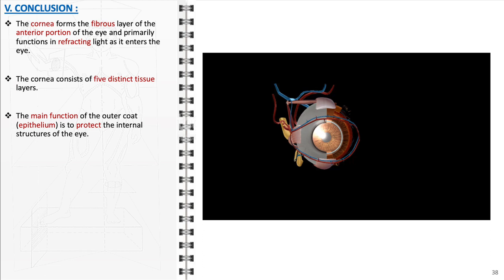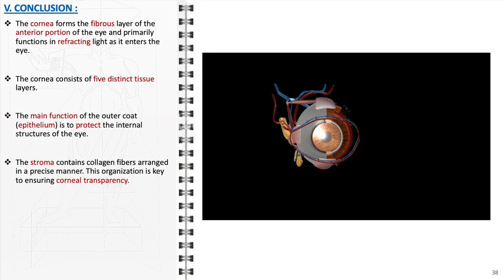It acts as a barrier against environmental factors and pathogens while also contributing to the cornea's overall optical properties. The stroma, which is the thickest layer of the cornea, contains collagen fibers arranged in a precise manner. This organization is key to ensuring corneal transparency, as it allows light to pass through without significant scattering.